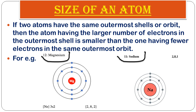Even though magnesium and sodium both have three shells, magnesium has two electrons in its last shell while sodium has one. Because magnesium has more electrons, the nuclear charge pulling them in is relatively greater, making magnesium smaller than sodium. So fewer electrons in the outermost shell means a larger atomic size when the number of shells is the same.